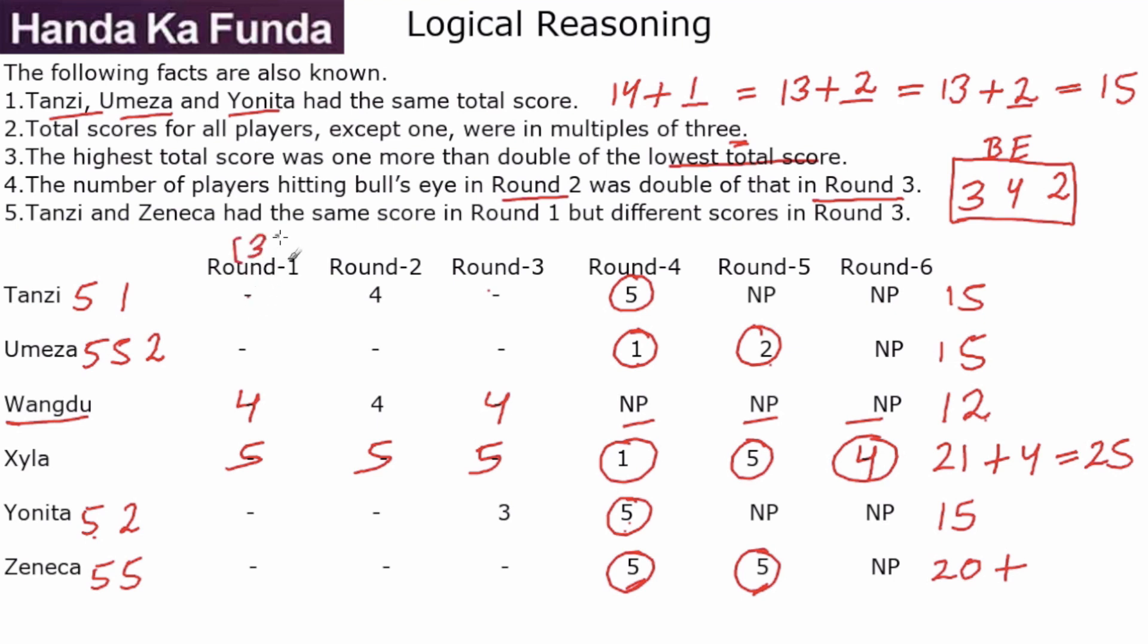3 in round 1, 4 in round 2, and 2 in round 3. Now I need 4 bull's eyes here. The only way it is possible is if this is 5, this is 5, and this is 5. Now for Yonita, the only score which is left is 2. So for Yonita, we have figured out that the arrangement is 2-5-3-5. The last condition says Tanzi and Zeneca had the same score in round 1 but different scores in round 3.